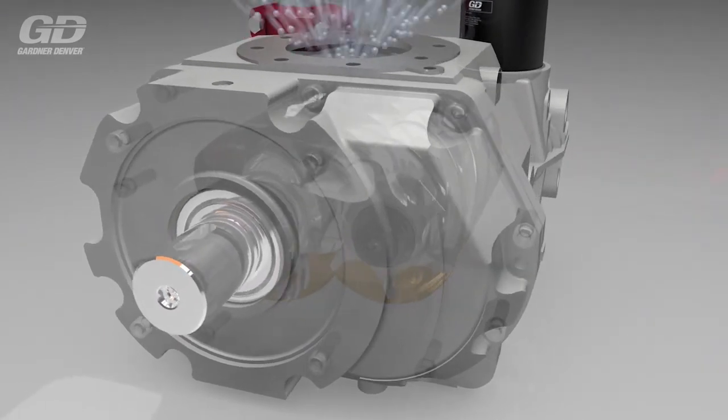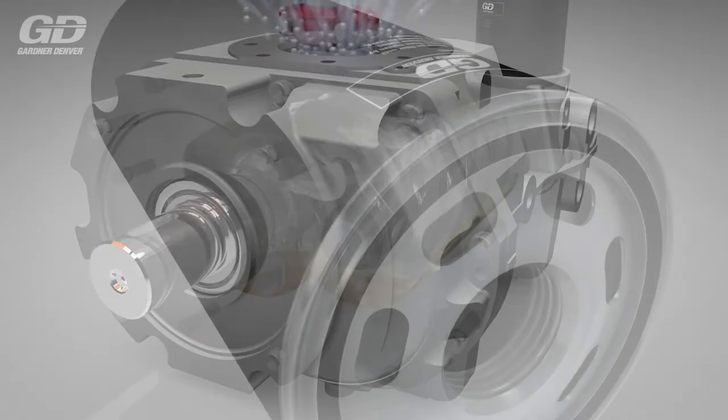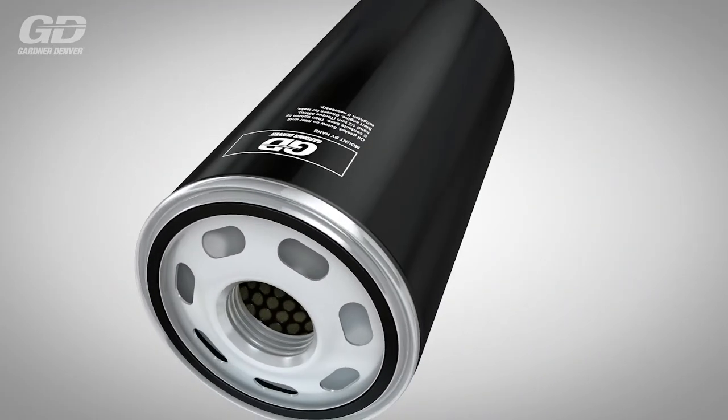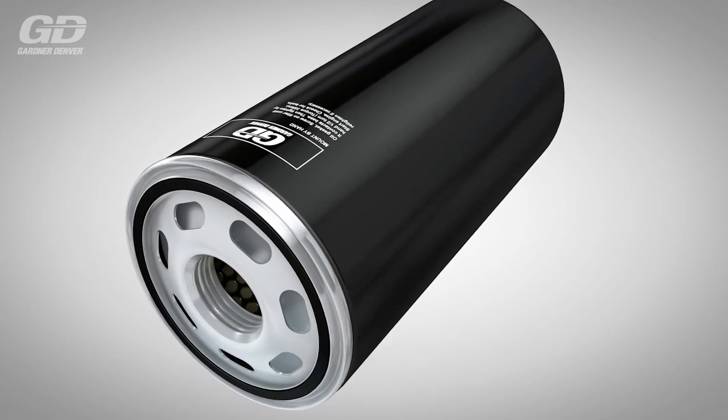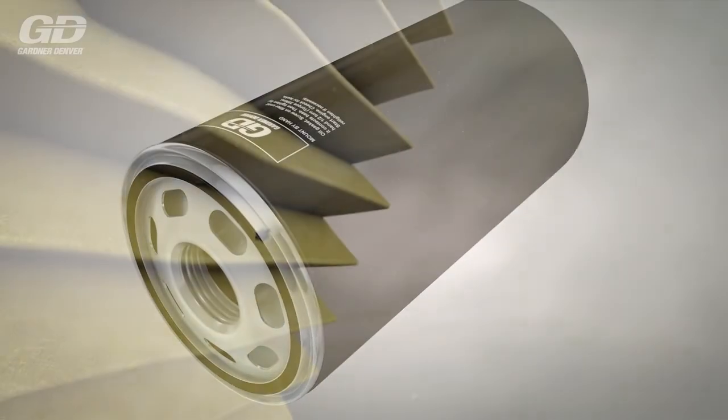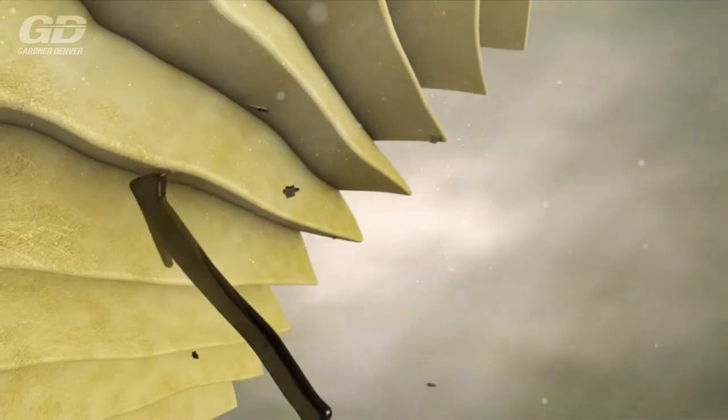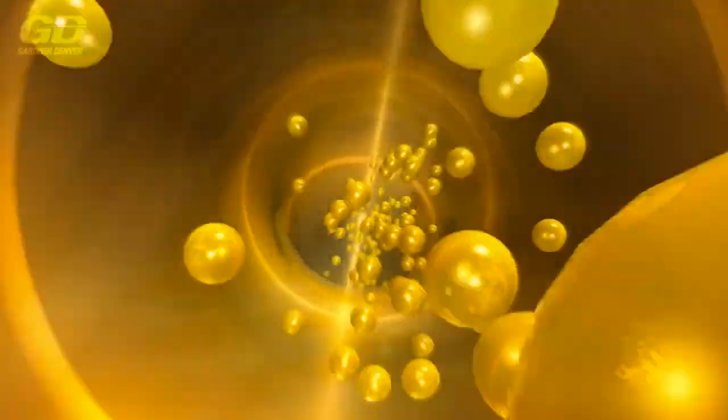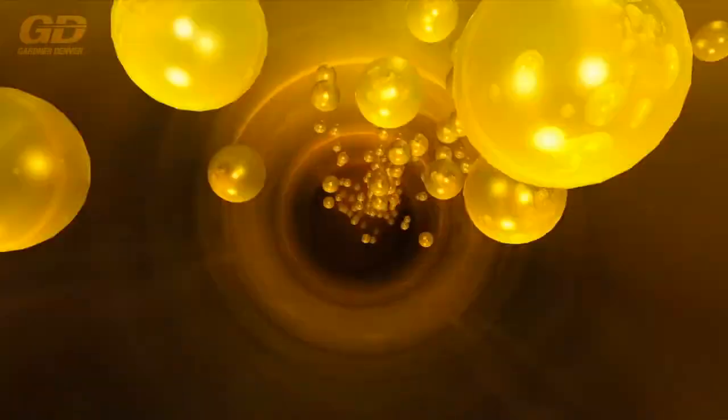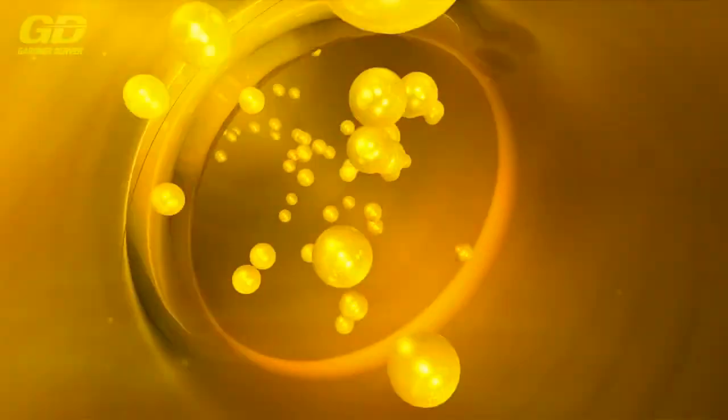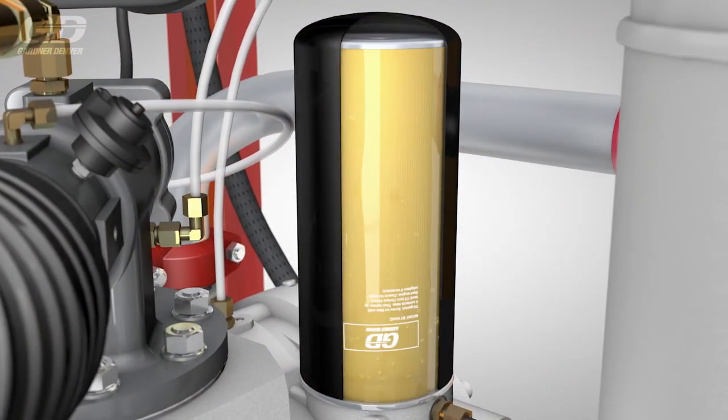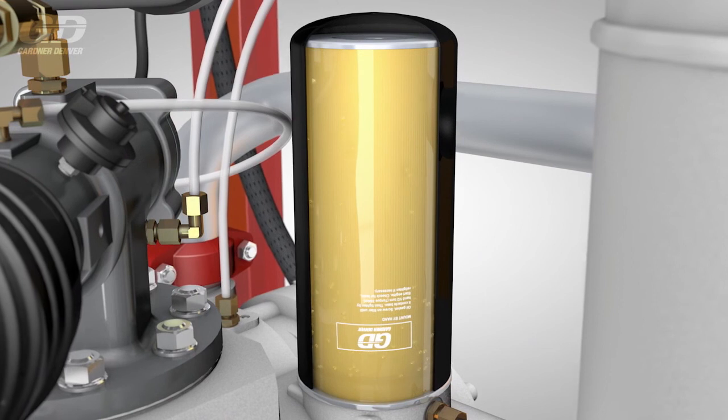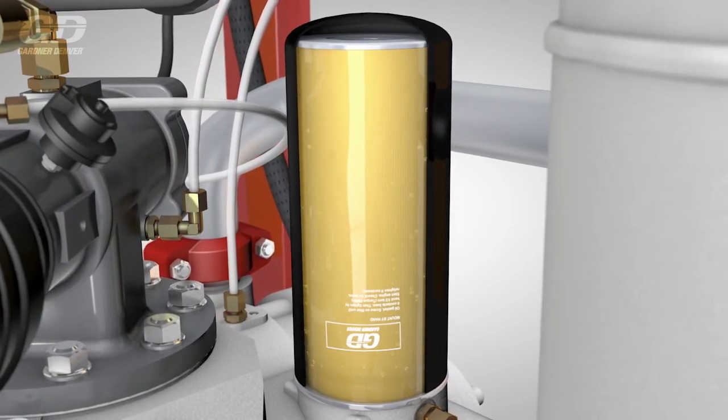Gardner Denver oil filters separate the smallest particles such as dust and particles arising from the wear of metal and so protect the compressor's internal components. Compressor oil acts much more aggressively than engine oil. The demands placed on the filter element are thus considerably higher. Gardner Denver has developed innovative filter media to meet these requirements. The same is true for other components of the oil filter such as the seals and housing. The highest quality is standard.